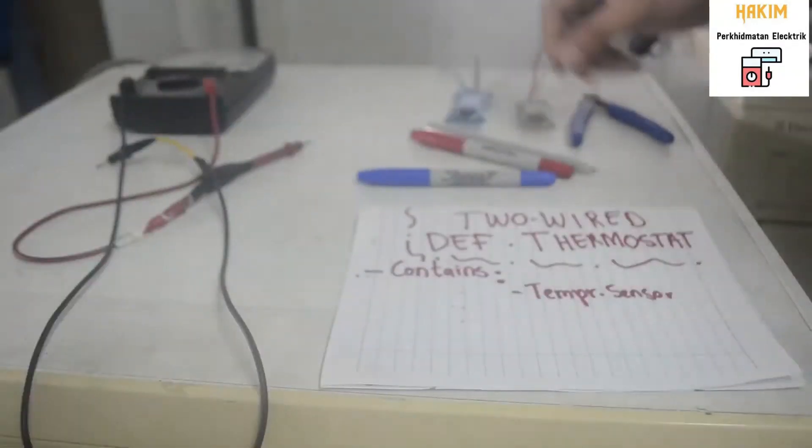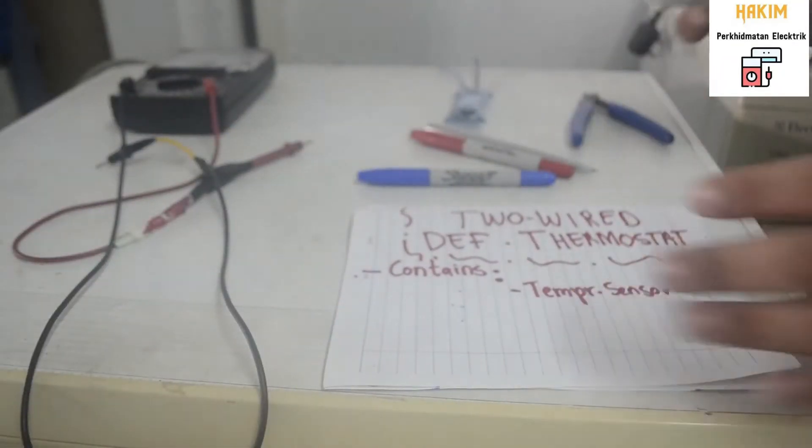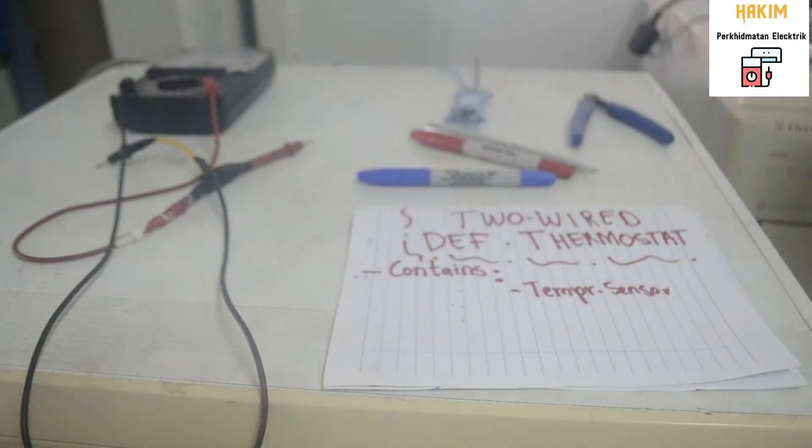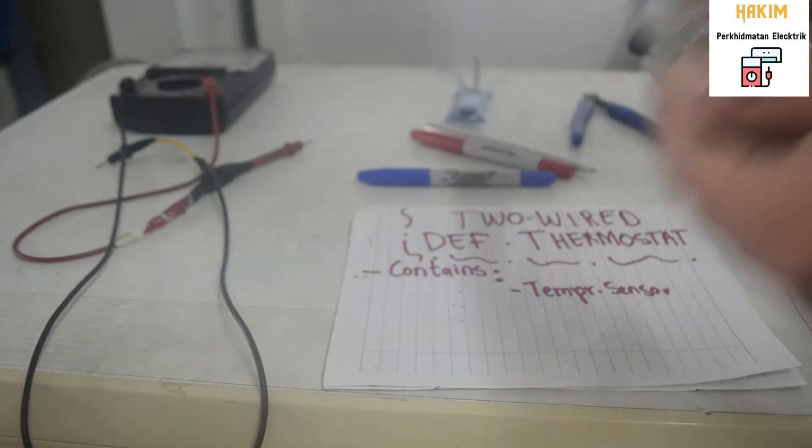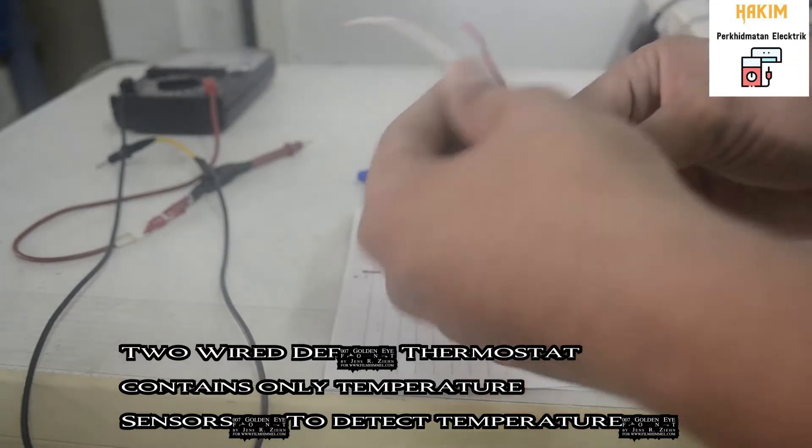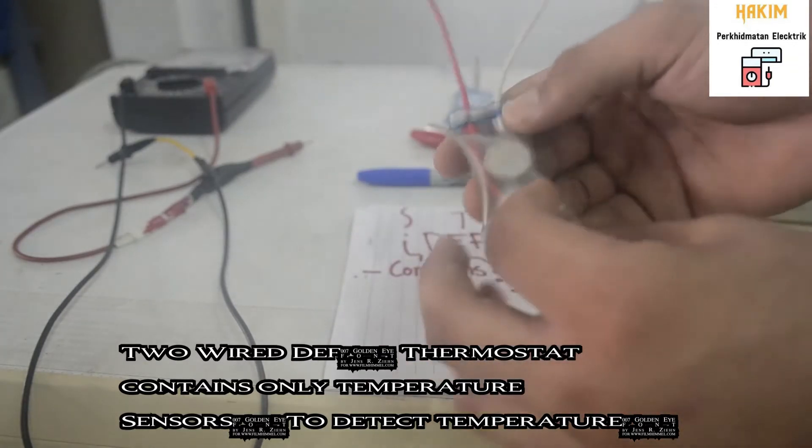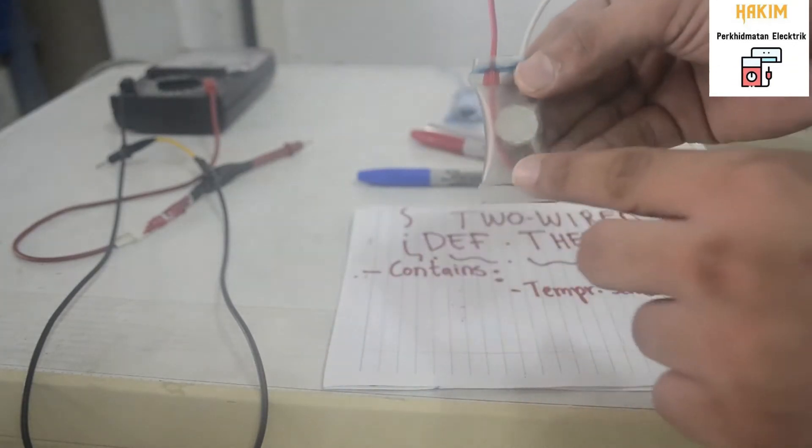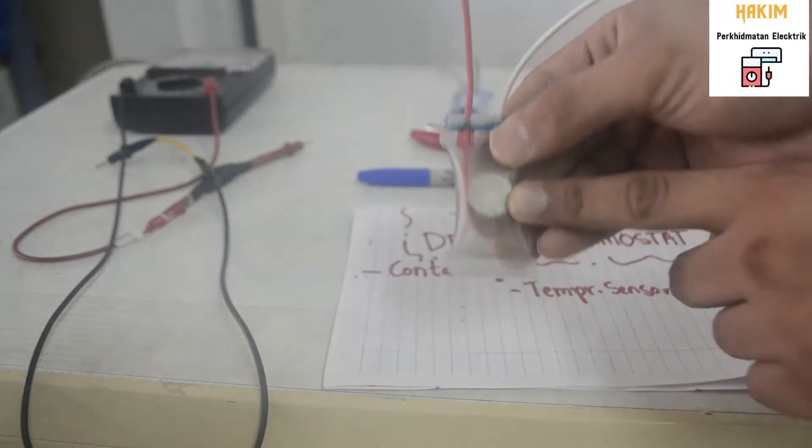So today we will be looking at two different thermostats and explaining why they are different. So here we are with the two-wire, let's talk about the different defrost thermostats. So in a two-wire thermostat, we usually have just a sensor board, a temperature sensor.